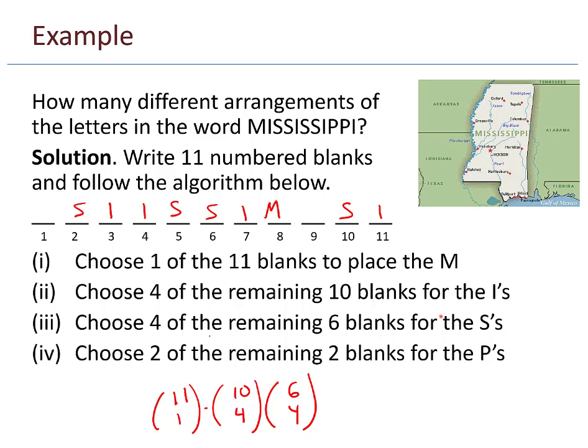And then finally, choose 2 of the remaining 2 blanks for the p's. I have no choice, right? There's only one way to do it. p, p. And I guess I could write that 2 choose 2 just to be complete. 2 blanks, choose 2 of them. 2 choose 2 equals 1. And so the product of those four numbers, 11 choose 1 times 10 choose 4 times 6 choose 4 times 2 choose 2, that ends up being 12,600.